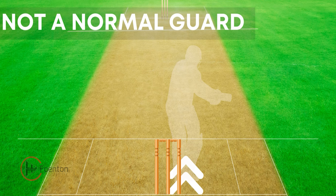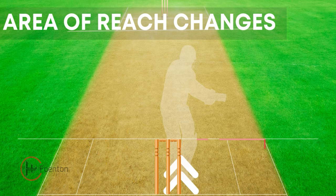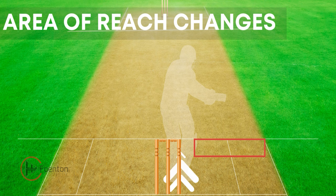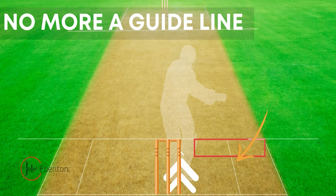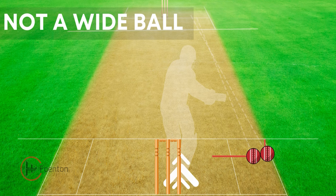Now let's look at the situation where the batsman moves towards the off side of the stumps. The area of reach will also move towards the right-hand side of the batsman, moving as much as the batsman has moved compared to the normal guard position. In this situation, the wide line guide will no longer serve as a guide to determine the wide ball. If the bowler has bowled outside the wide ball guide but the ball is still within the reach of the batsman, it will not be called a wide ball.